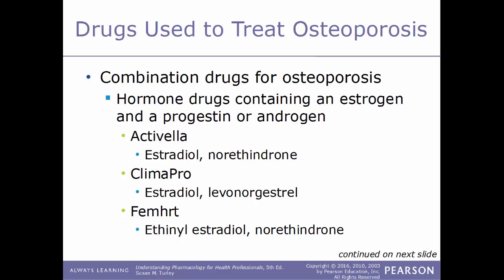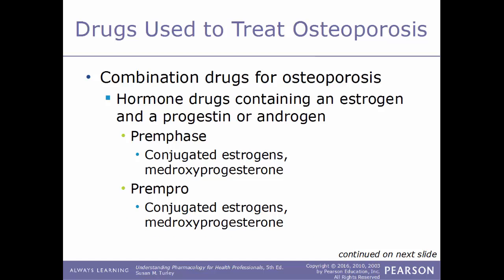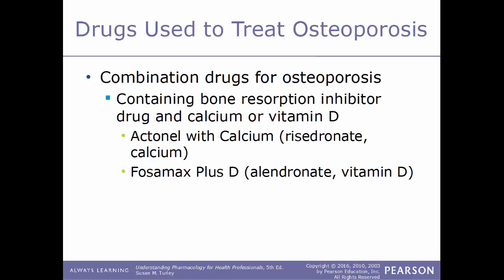Combination drugs are commonly used for osteoporosis. Some combine a hormone drug containing estrogen and a progestin or androgen — for example, Activella (estradiol and norethindrone), Climara Pro (estradiol and levonorgestrel), FemHRT (ethinyl estradiol and norethindrone), Premphase (conjugated estrogens and medroxyprogesterone), and Prempro (conjugated estrogens and medroxyprogesterone). Other combinations include a bone resorption inhibitor with calcium or vitamin D — for example, Actonel with Calcium (calcium and risedronate) and Fosamax Plus D (vitamin D and alendronate).